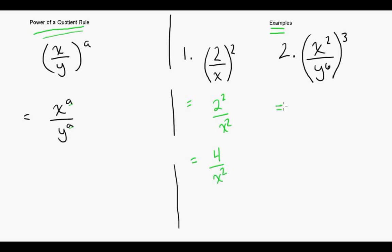Looking at the second example we have x squared over y to the sixth all cubed. So we bring the exponent 3 into the bracket and we're going to get x squared cubed and y to the 6 cubed.